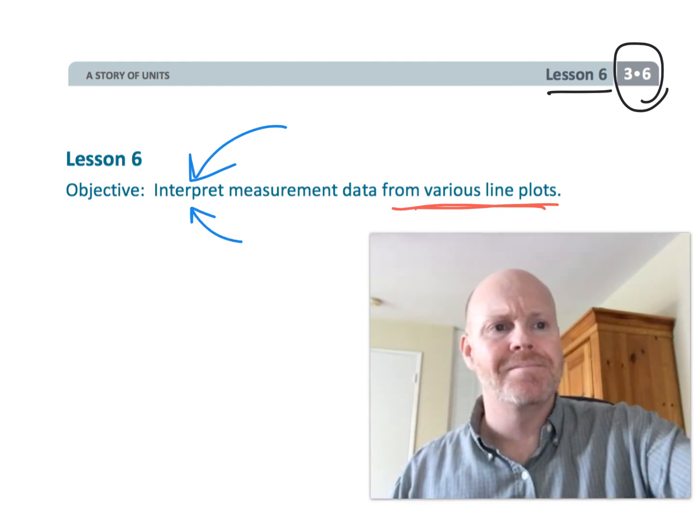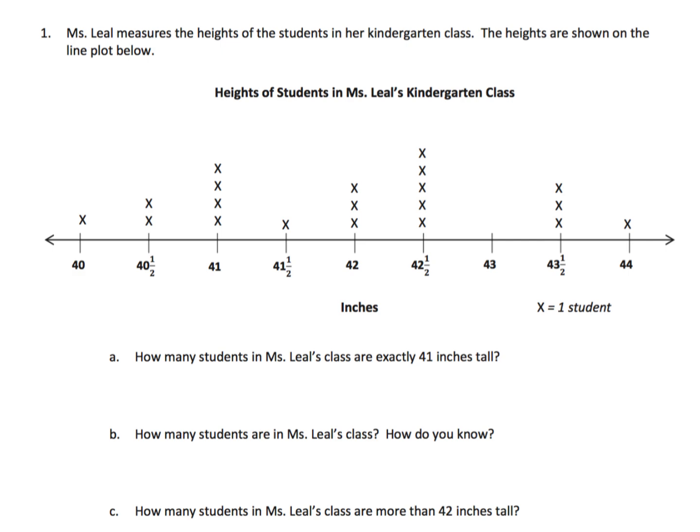All right, so we've been given this line plot and it says Miss Leal measures the heights of the students in her kindergarten class. The heights are shown on the line plot below and now we have all these questions that we're supposed to answer. But before we look at the questions, let's take a look at the line plot.